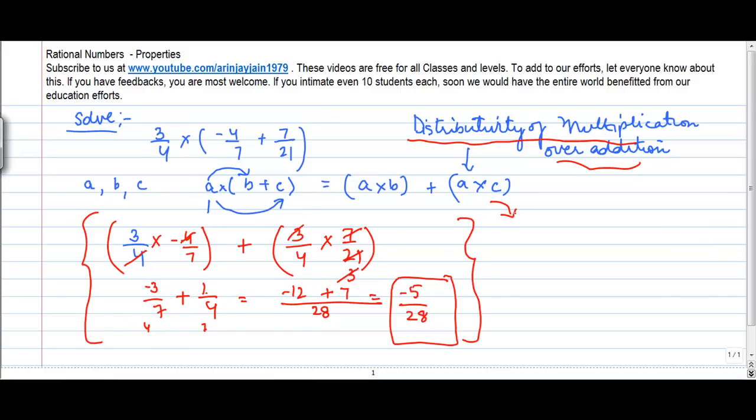Now the similar thing also applies for subtraction. So A into B minus C is equal to A into B minus A into C. Or you can write it as AB minus AC. This could have been applied in this example because you already have a minus number here. But you can remember this property for future references.